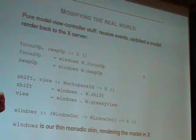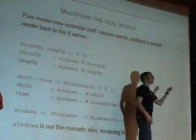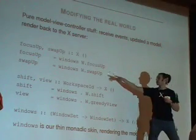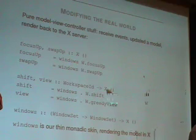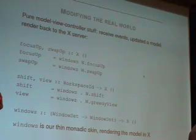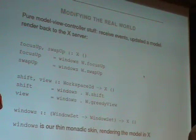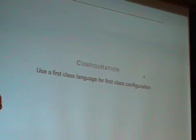So how do we modify the real world? We get an event and call this function 'windows', which takes the current state, applies some function to it — like focus up to move focus up — and then flushes it to the X server. Keeping that monadic skin very thin is the key thing. You have no logic in the monadic stuff. Once you move into the imperative part, you've given away the advantage that Haskell has of being able to analyse the code and reason about it.